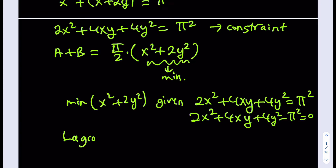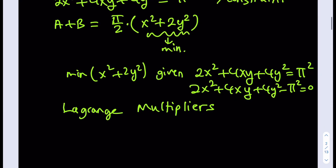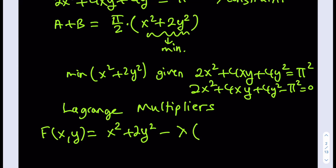We're going to use Lagrange multipliers — a cool method for these kinds of constrained optimization problems. We define a function f of two variables: f equals the expression to minimize, X squared plus 2Y squared, minus lambda multiplied by our constraint, which is 2X squared plus 4XY plus 4Y squared minus π squared. We then look at partial derivatives.